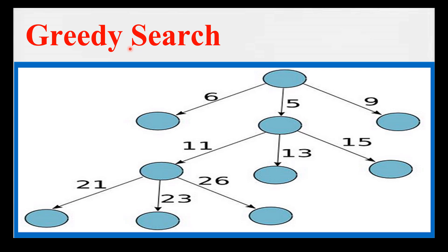To summarize, greedy search in natural language processing is a method that makes the locally optimal choice at each step, selecting the most likely word or phrase given the previous context. It is a simple and computationally efficient algorithm, but it can lead to sub-optimal results in some cases.